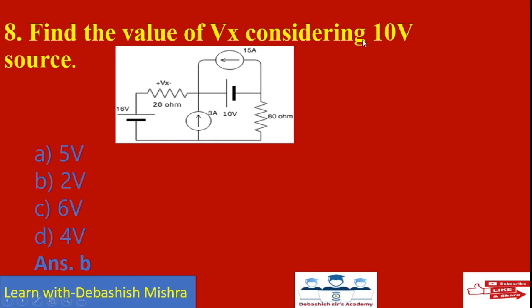Find the value of Vx considering the 10 volt source. When you consider the 10 volt source, the current sources are open circuit and the other voltage source is short circuit. Now 20 ohm and 80 ohm are in series. Apply voltage division rule: 10 volts times 20, divided by 20 plus 80, equals 200 divided by 100, which is 2 volts. So the answer is (b): 2 volts.